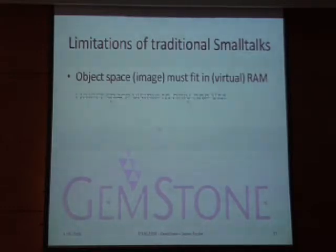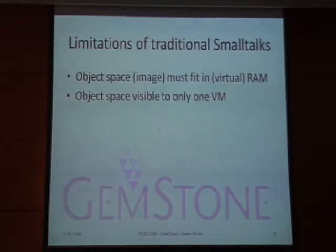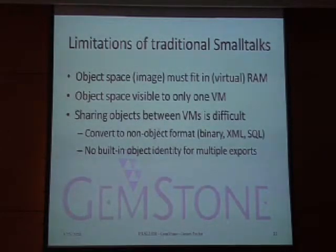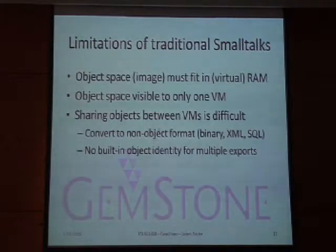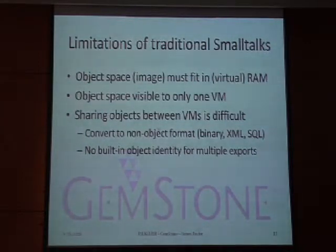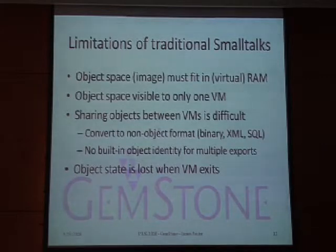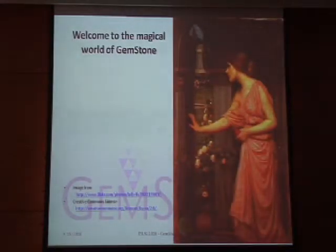There are some limitations of traditional Smalltalk. First, the object space is limited — you have to fit into RAM. The object space is visible to only one virtual machine, so sharing objects between virtual machines is difficult. You can file out to a non-object format — binary, XML, SQL — but there's no built-in object identity, so when you file things back in you may get two copies of objects and relationships are not necessarily restored properly. When the virtual machine exits, if you haven't saved your image you lose your state.